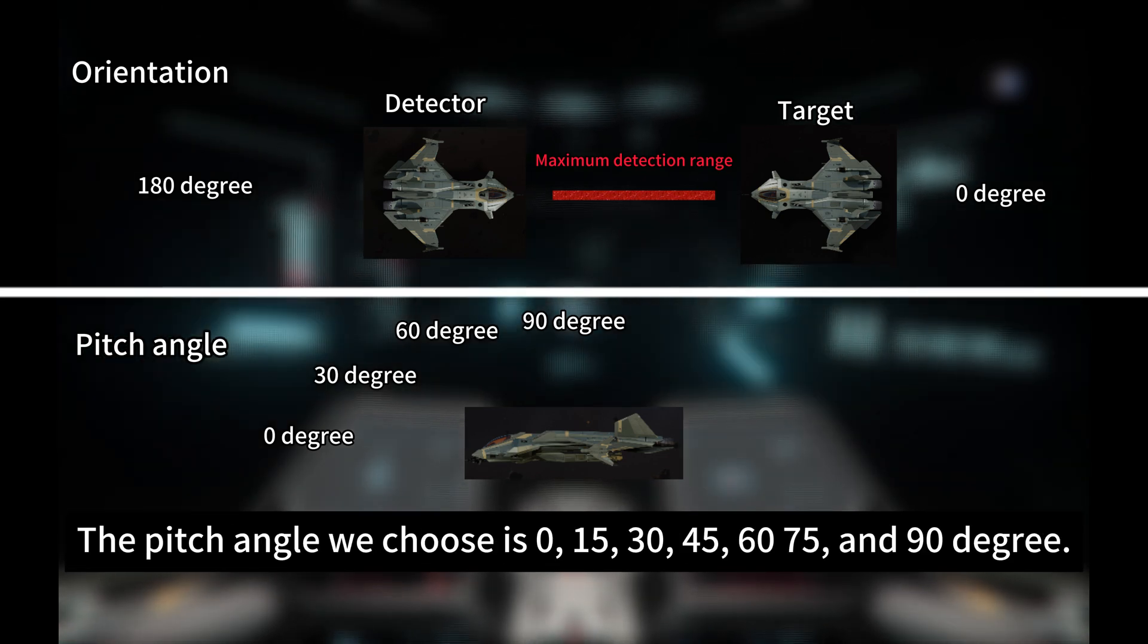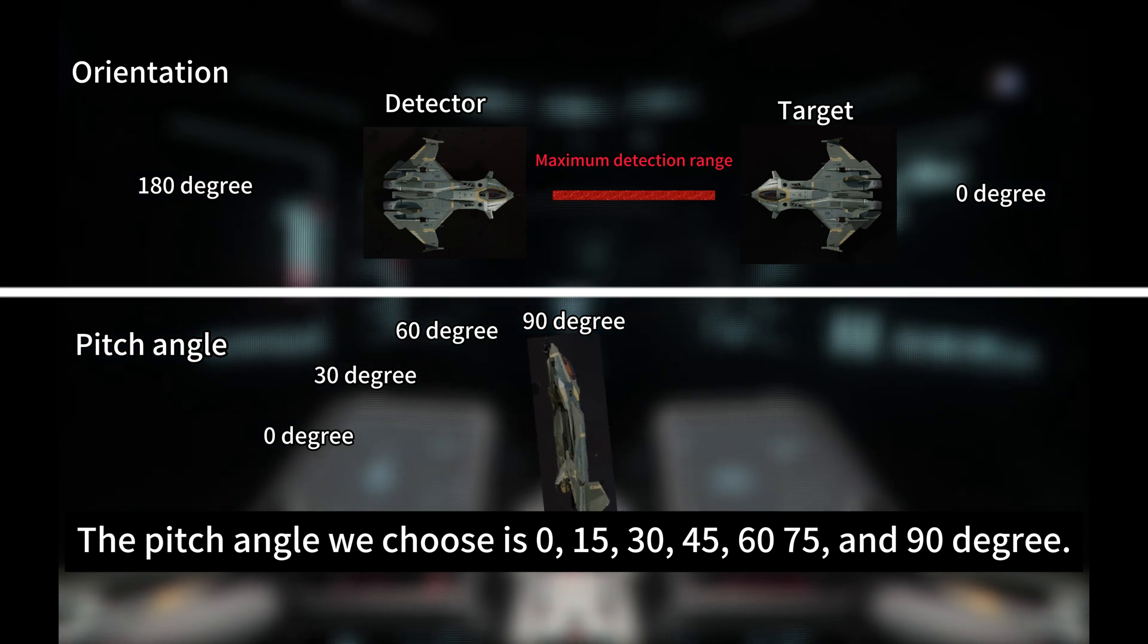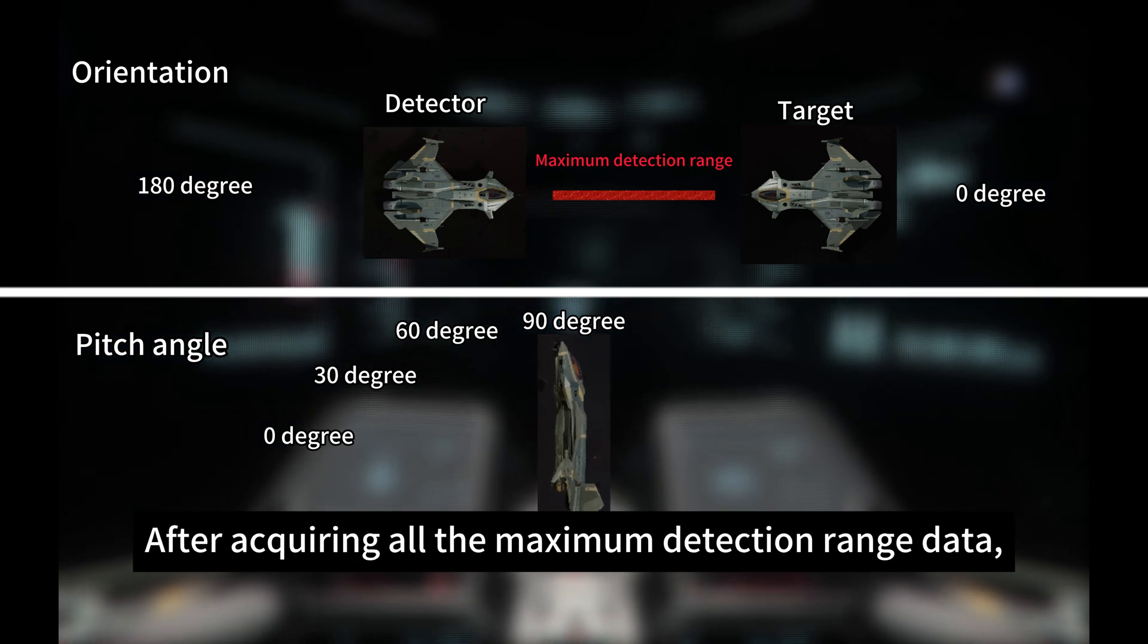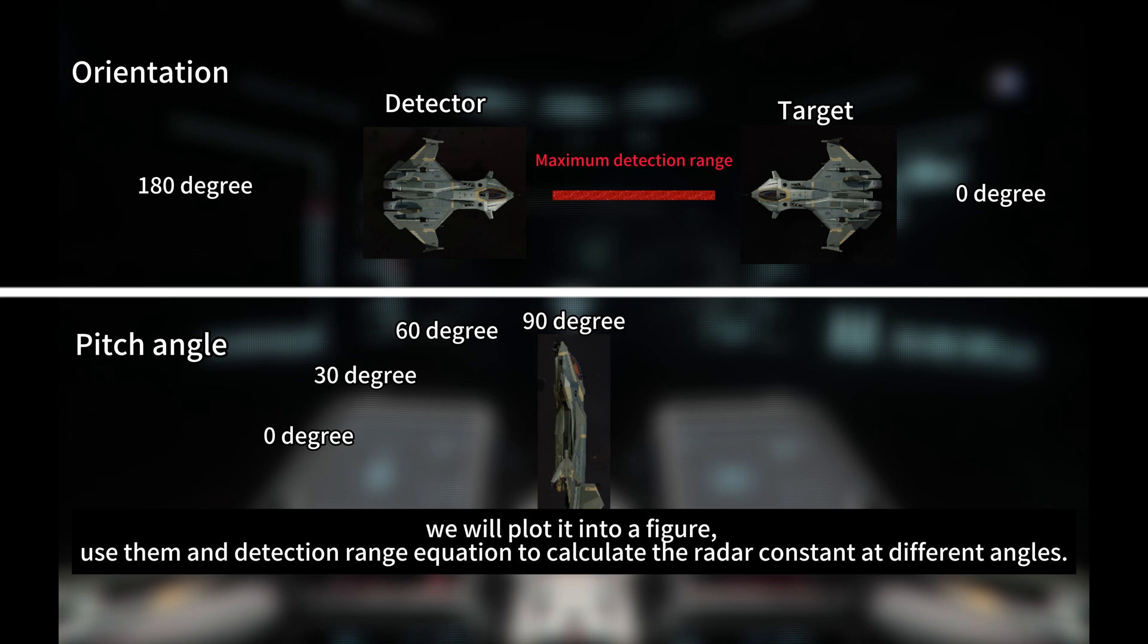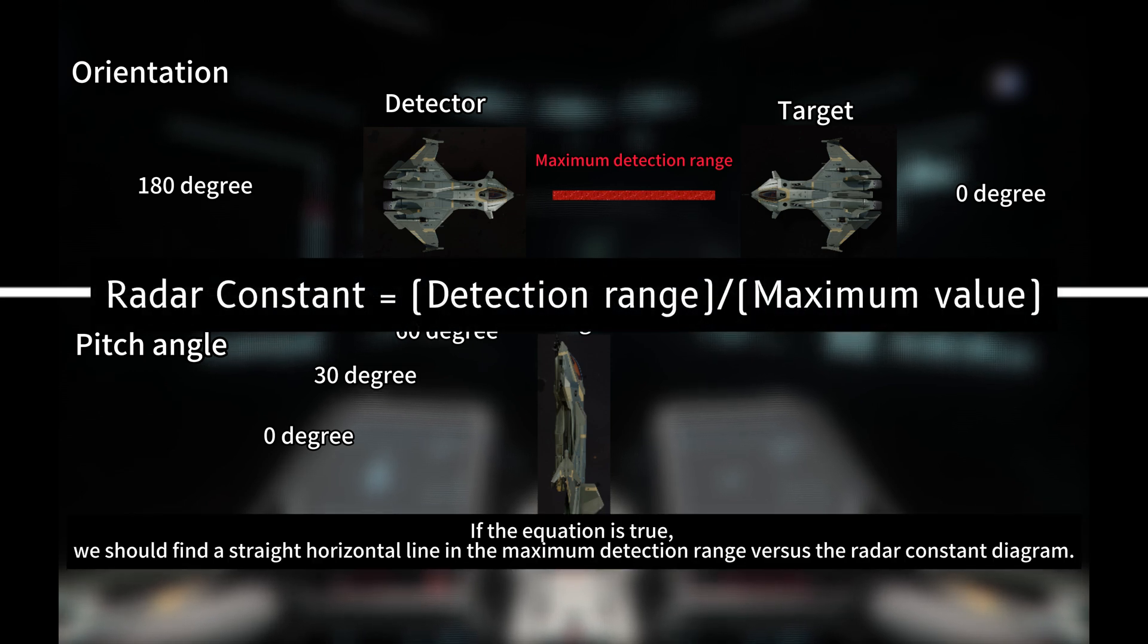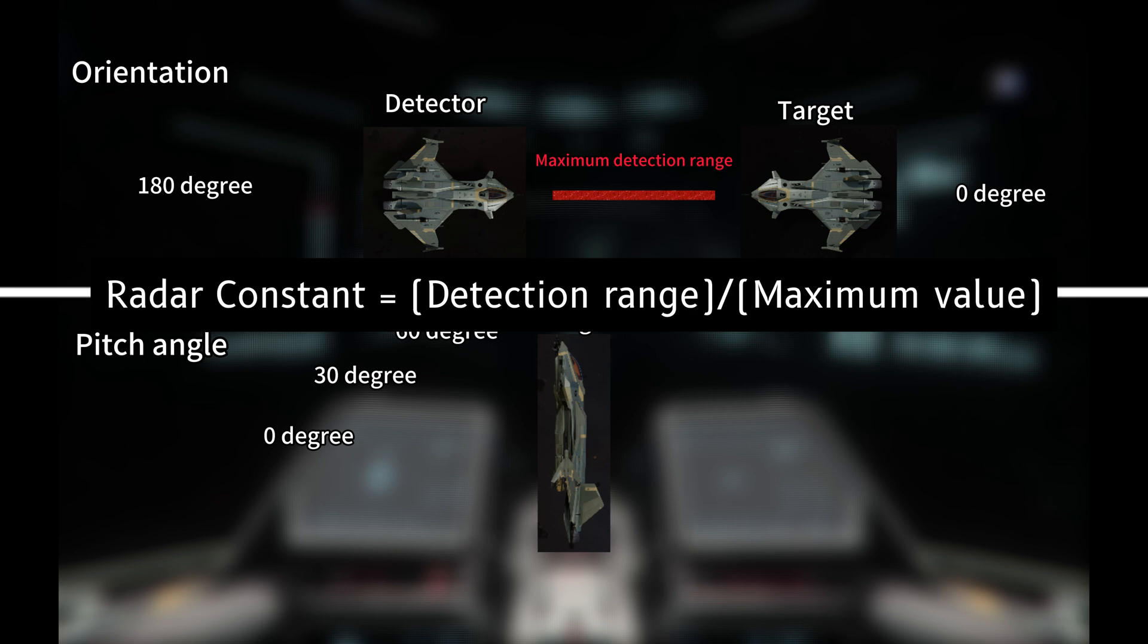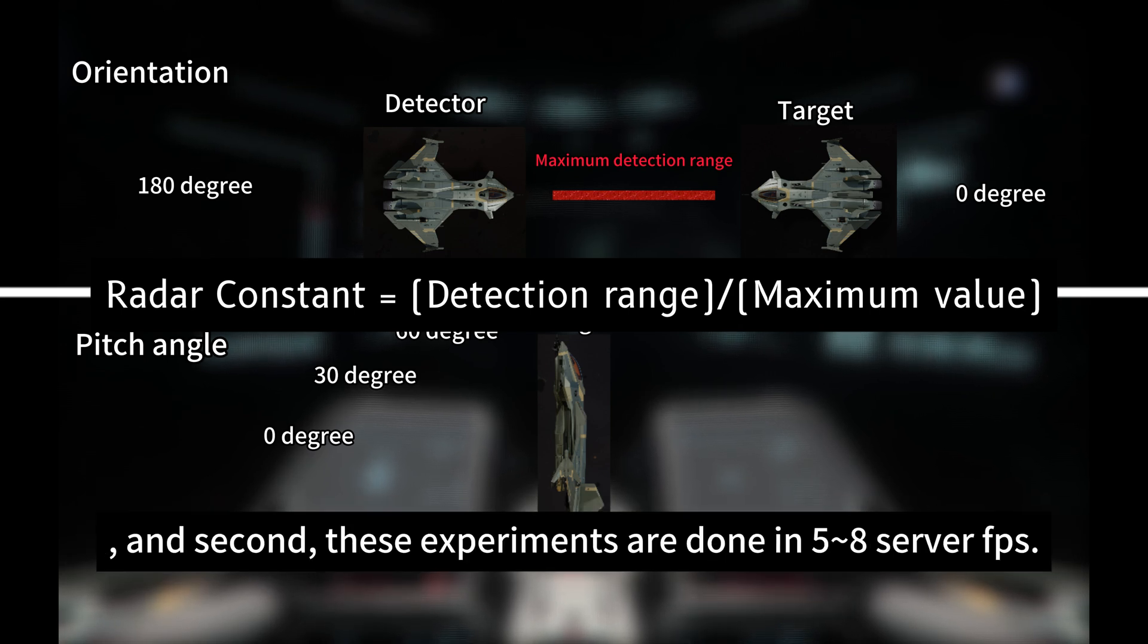The pitch angles we choose are 0, 15, 30, 45, 60, 75, and 90 degrees. After acquiring all the maximum detection range data, we will plot into a data figure, and use the detection range equation to calculate the radar constant at different angles. If the equation is true, we will find a straight horizontal line in the maximum detection range versus the radar constant diagram. Two things need to be noted: first, the following experiments are done in 3.21.1 PU environment. And second, these experiments are done in 5 to 87 FPS.